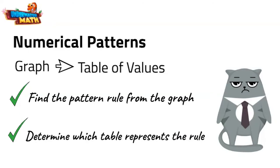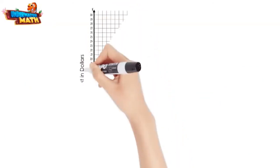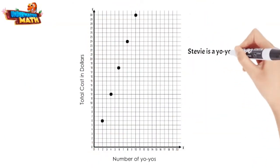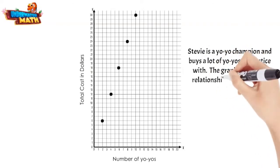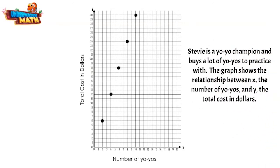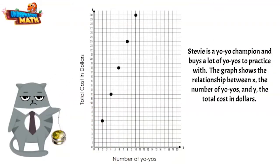Let's look at an example. Stevie is a yo-yo champion and buys a lot of yo-yos to practice with. The graph shows the relationship between x, the number of yo-yos, and y, the total cost in dollars. Stevie's got nothing on me. Which table also represents this relationship?